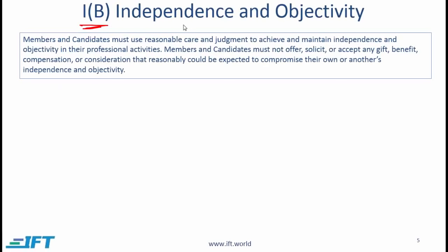We now come to Standard 1b, Independence and Objectivity. Members and candidates must use reasonable care and judgment to achieve and maintain independence and objectivity in their professional activities. Members and candidates must not offer, solicit, or accept any gift, benefit, compensation, or consideration that reasonably could be expected to compromise their own or another's independence and objectivity.